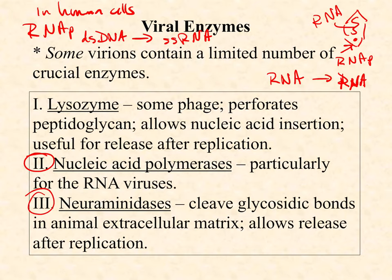Let's look at neuraminidase. This is an alternative spike we see, for example, in influenza. Neuraminidase breaks down parts of the human extracellular matrix. We don't have a cell wall, but we have fibers of polysaccharides and proteins that add physical structural support to our various tissues. Those fibers can impede the ability of a virus to get in, or more commonly to get back out again after replicating inside a host cell. Neuraminidases are often found as spikes in envelopes that help essentially dissolve away little patches of the extracellular matrix so the virus particles can get out.